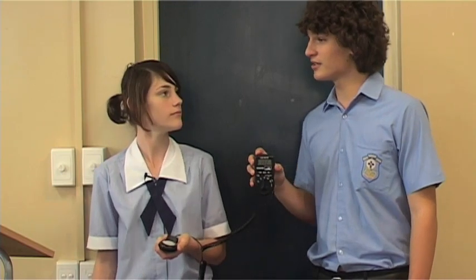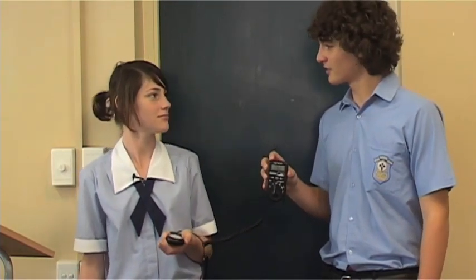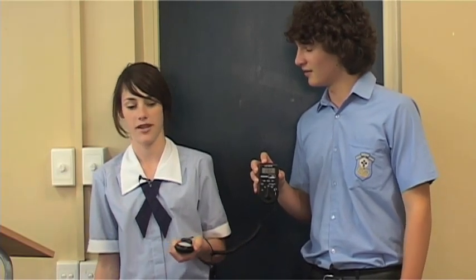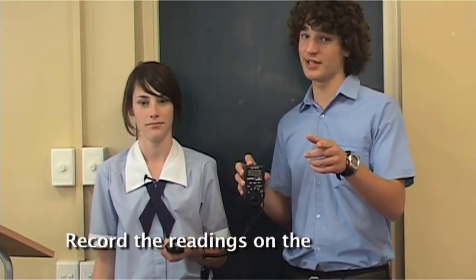You know what we could do Georgia? What Jack? We could go around the school and check each classroom to see how much light there is in there. Good idea. But remember to record it on a data recording sheet.